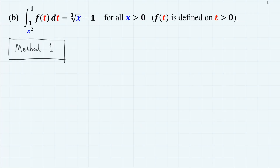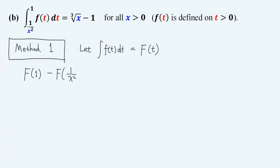Now the second problem: the integral of f(t) dt from 1/x² to 1 equals the cube root of x minus 1. In the first method, let the integral of f(t) dt be capital F(t). Then F(1) minus F(1/x²) equals the cube root of x minus 1.